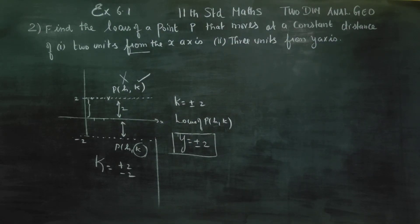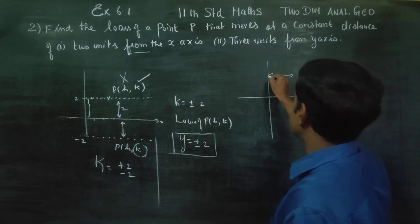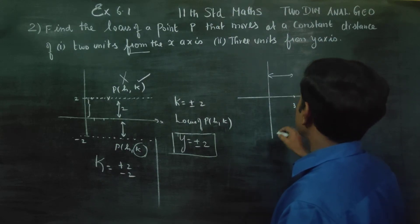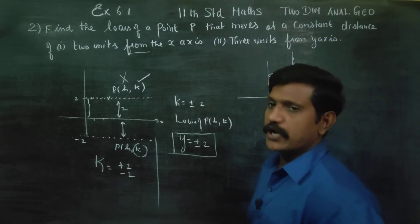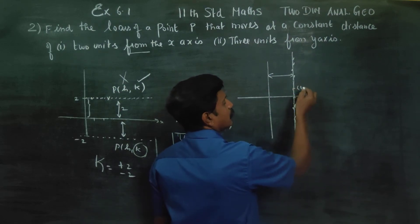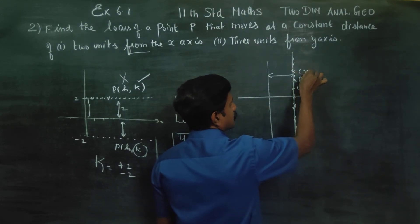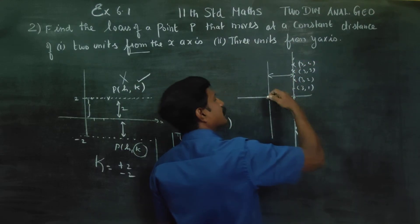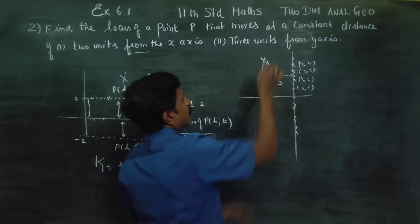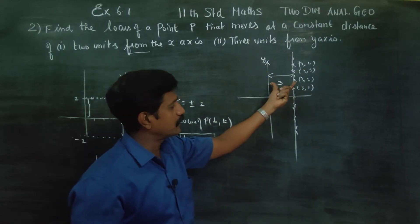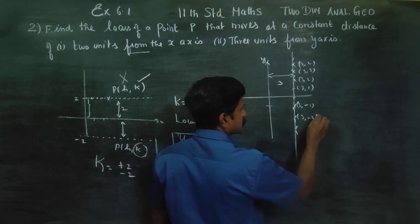Similar concept — 3 units from y-axis. Same concept: y-axis ilanthu 3 units. Measure 3 units from the y-axis. For example, one point here. The point becomes 3,2. Let us consider this point is 3,2; the point 3,3. Distance is 3. This is minus one — 3, minus one; 3, minus two; 3, minus three.